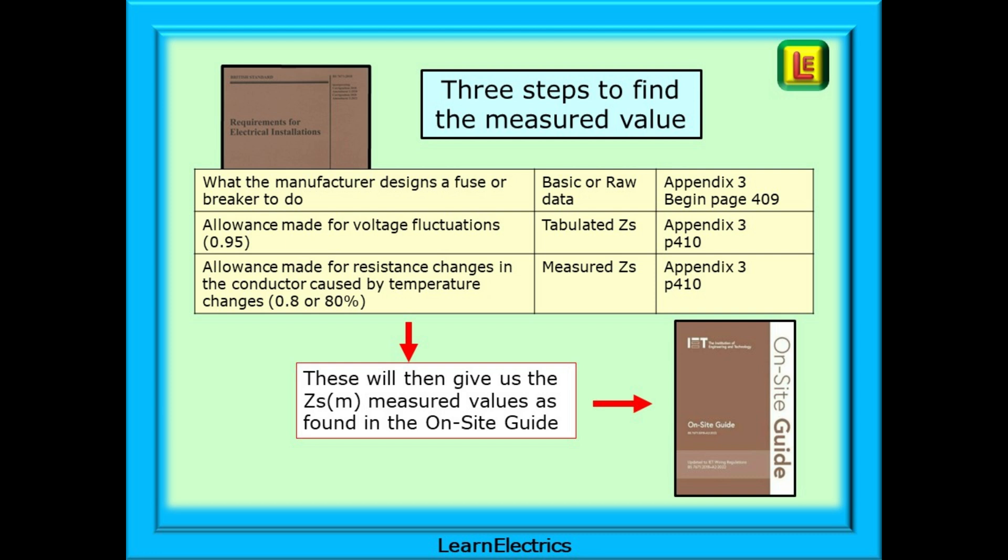We can then find this in Appendix 3, beginning with page 409 in the regulations book. Put simply, these are the response curves that the fuse manufacturer must work to, and this gives us a starting point for ZS. The second step will take the raw data and make an allowance for voltage fluctuations in the supply. We do this by multiplying the raw data, or basic data, by 0.95 to give us a smaller value of ZS.